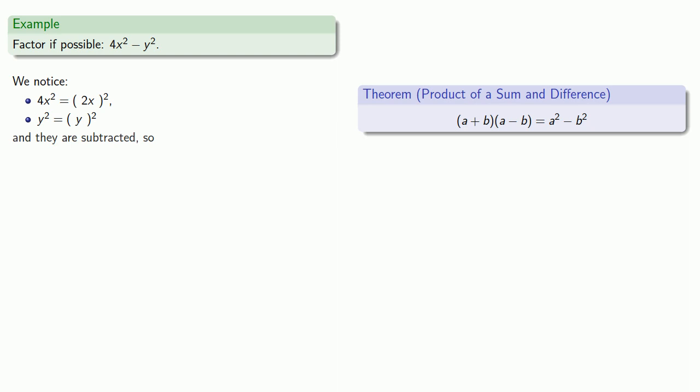And they are subtracted, so we do have a difference of squares, and that will factor as the sum and difference of the square roots, 5x and 4. So this will factor as (5x + 4)(5x - 4).